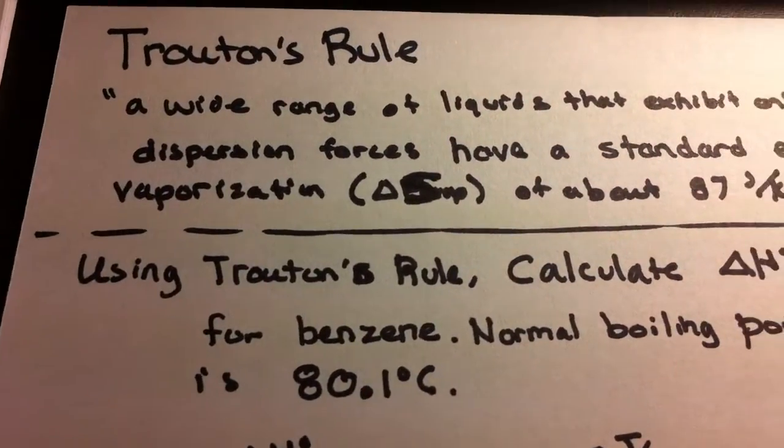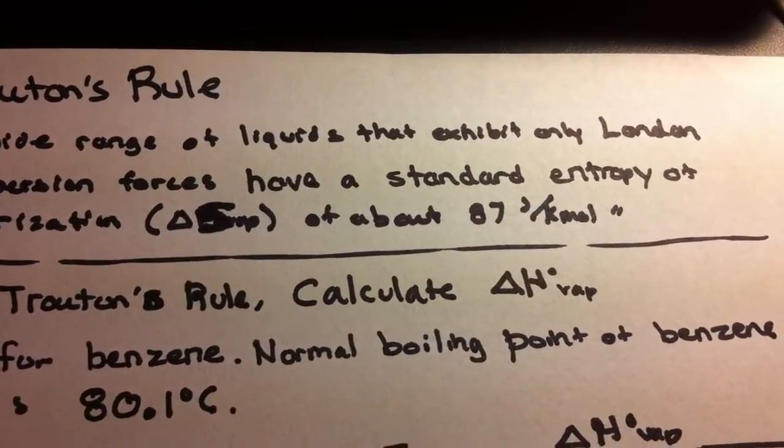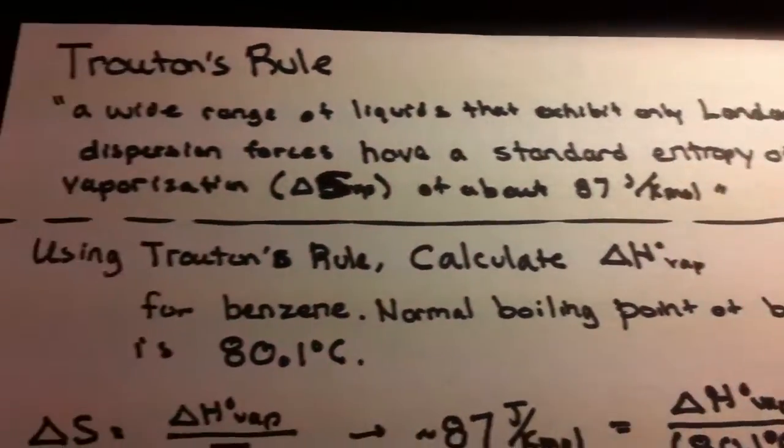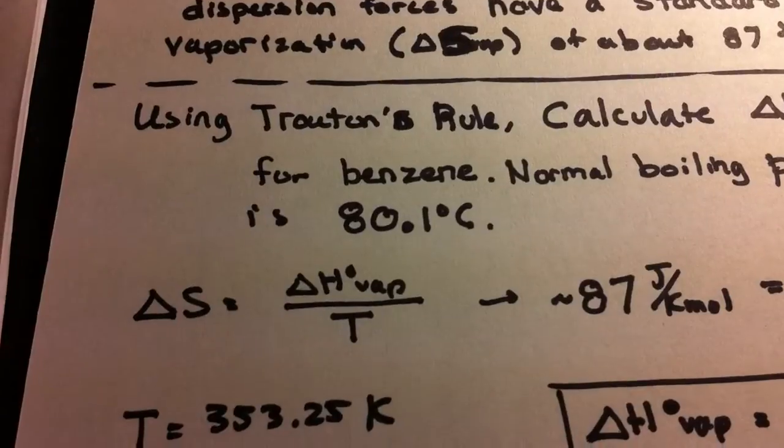Using Troughton's rule, let's try and calculate delta H of vaporization for benzene. The normal boiling point of benzene should be about 80.1 degrees Celsius.